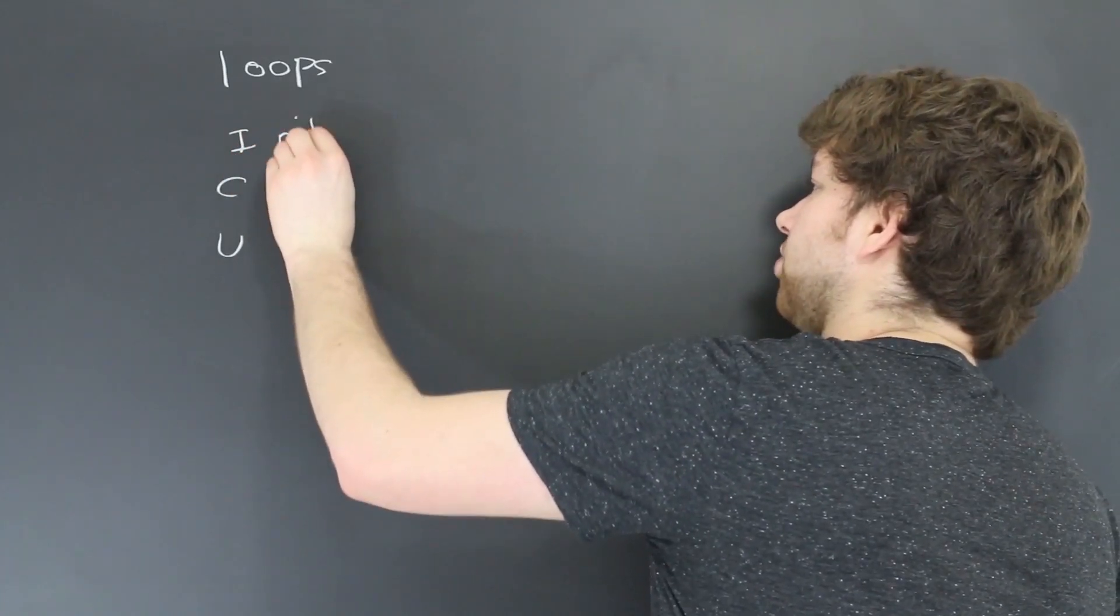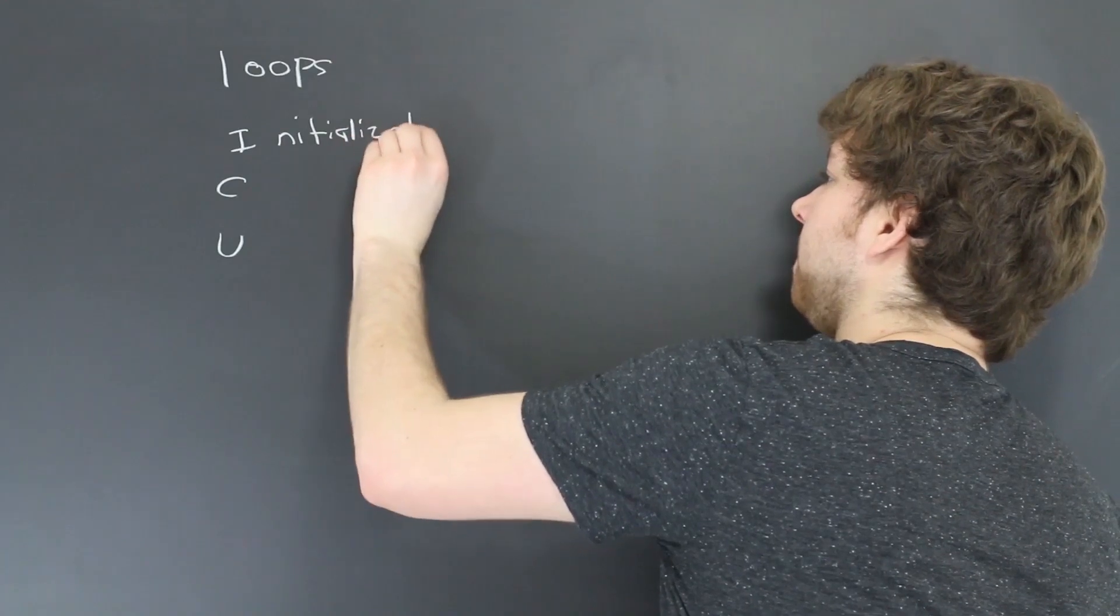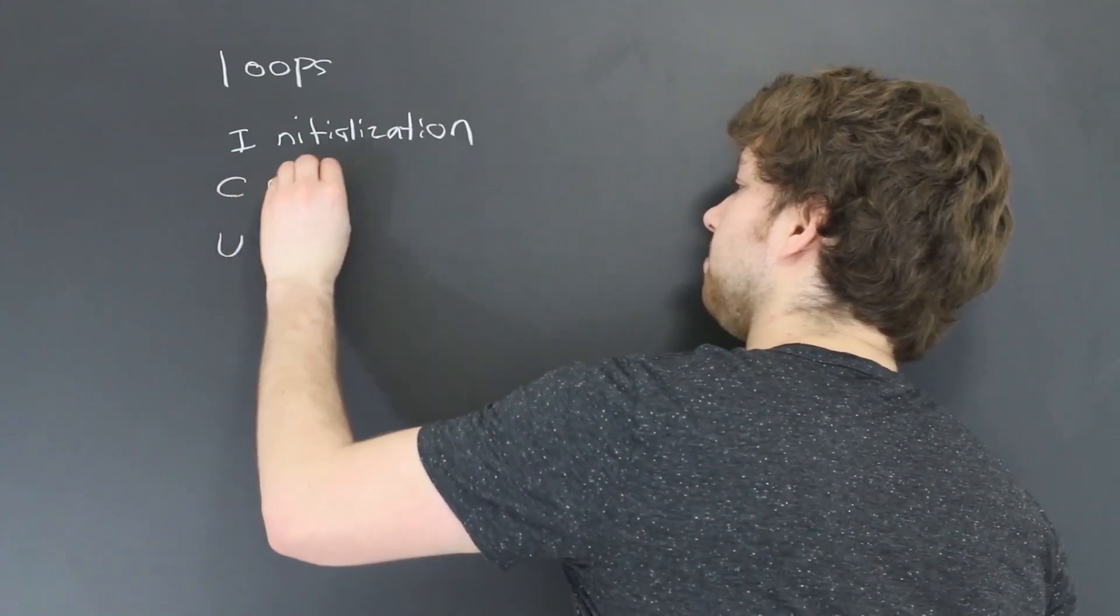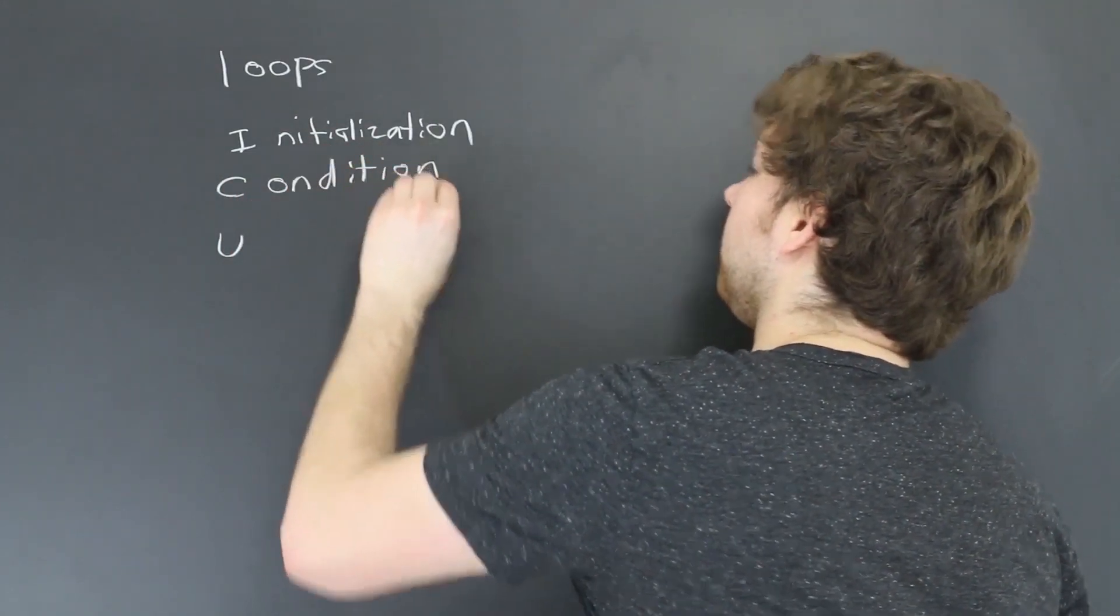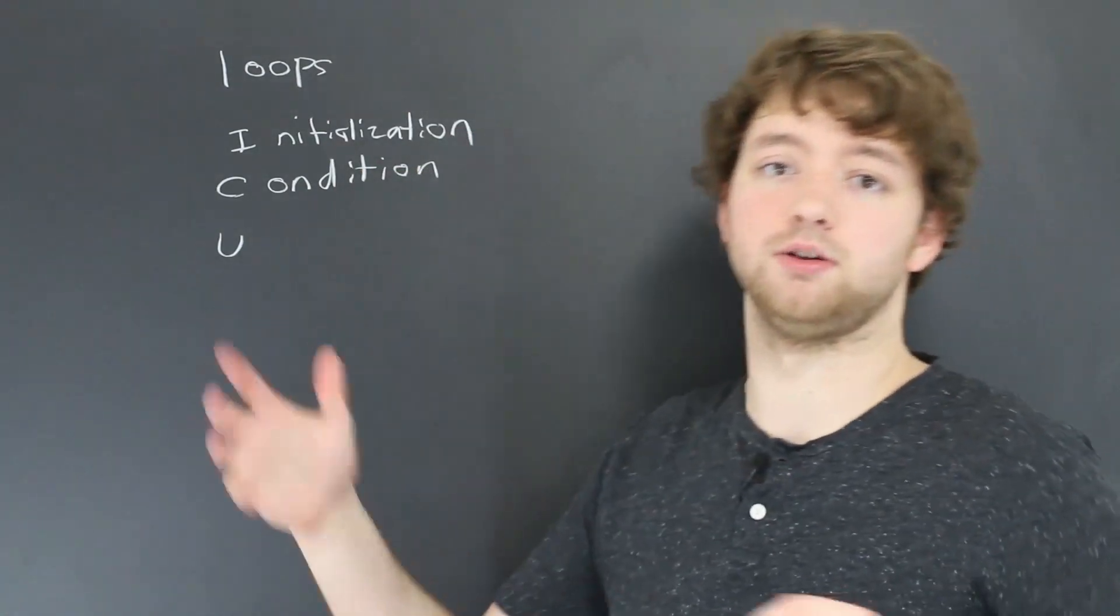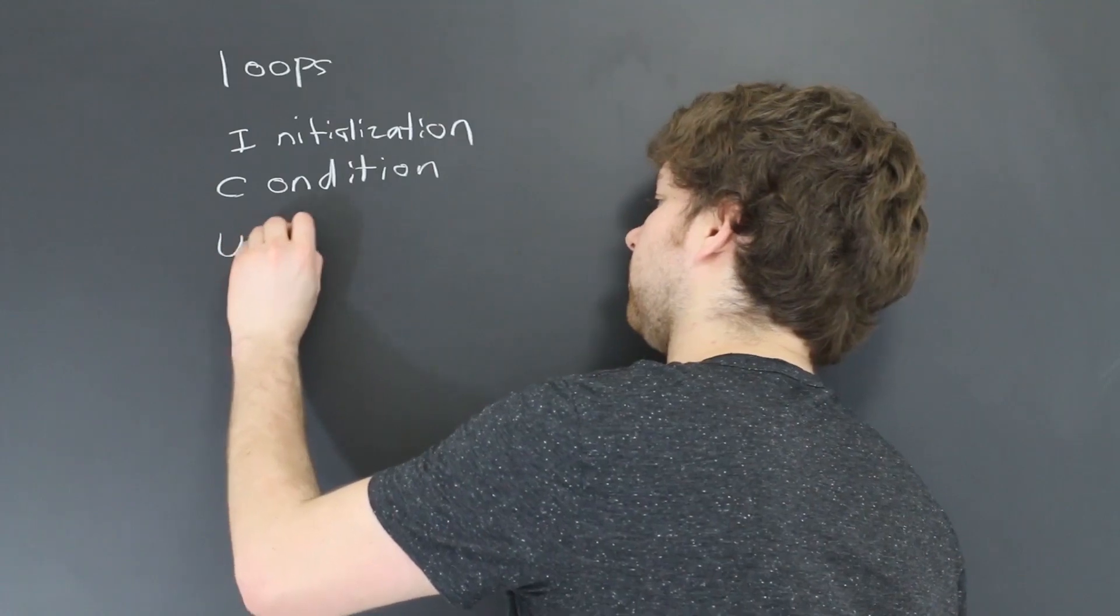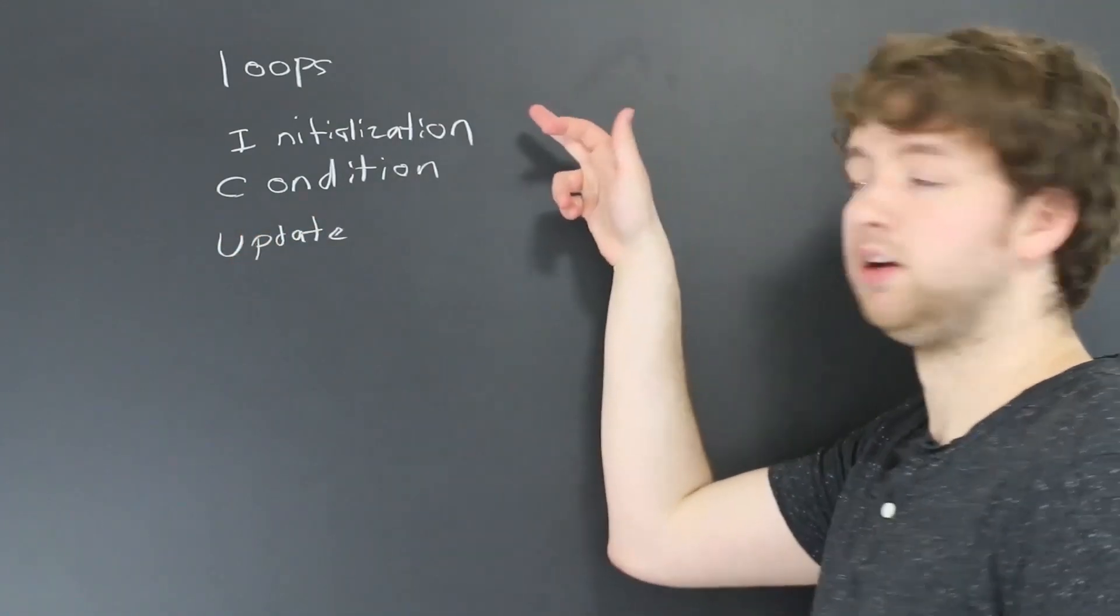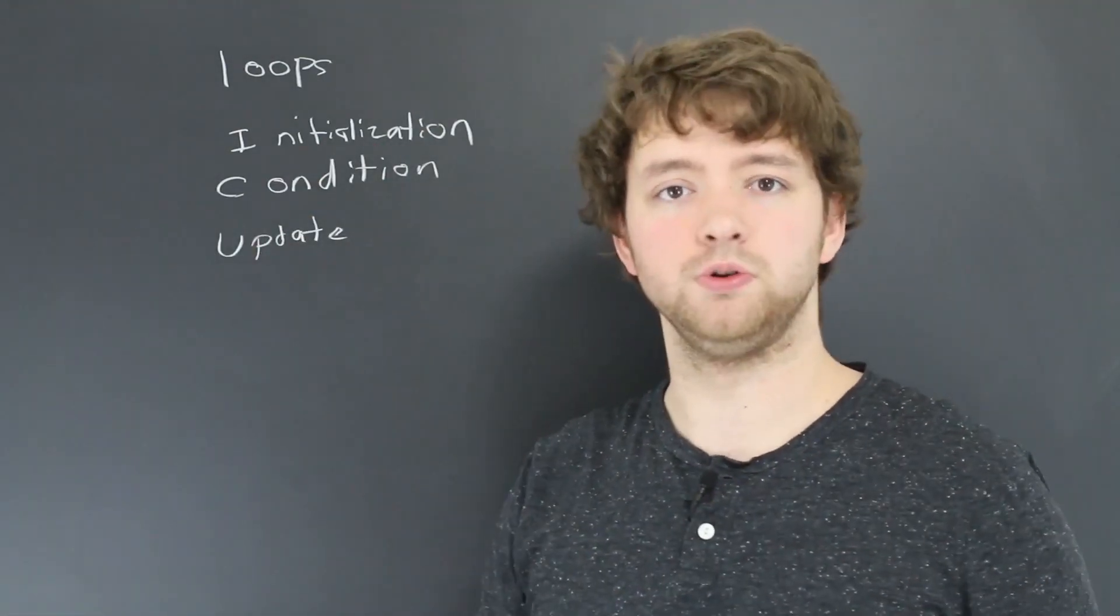We have an initialization. So this is where we set some variable equal to some value. So we have the initialization, then we have a condition. It's usually a comparison, but basically this is where we compare that original variable to some other value. Then we have an update. And this is where we change the original variable, usually to get closer to that condition to where it's no longer true, and we stop.